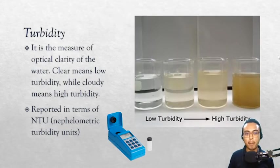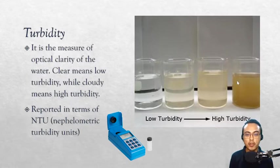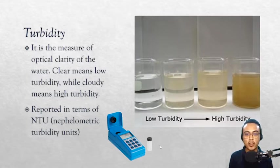Turbidity is the measure of the optical clarity of water. Low turbidity means the water is clear; high turbidity means there are lots of suspended particles and we cannot see through the water. Turbidity is not normally a problem for drinking water because potable water is required to have very low turbidity. We measure turbidity using a turbidity meter, and it is reported in NTU — nephelometric turbidity units. A higher NTU value might mean the water is not fit for consumption.